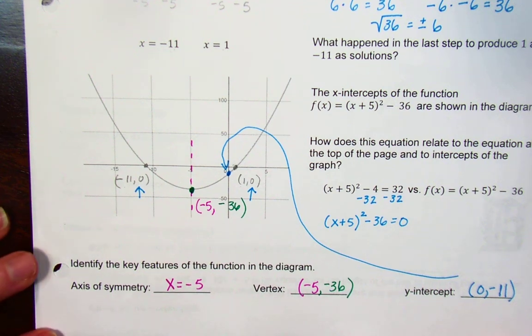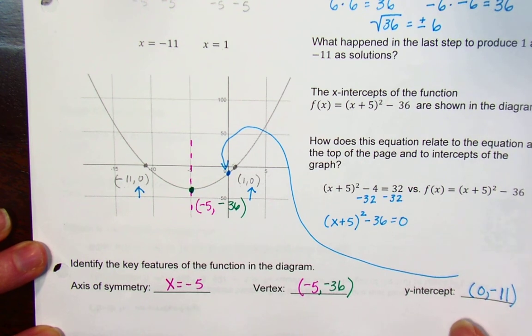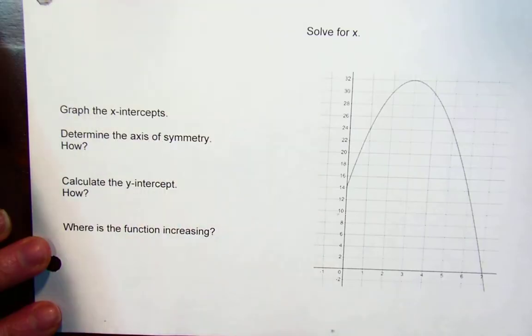Alright, hopefully you tried to find the axis of symmetry, the vertex, and the y-intercept on your own. If you have questions, please attend the next Skype meeting so you can ask about that. Let's move on to the next example.